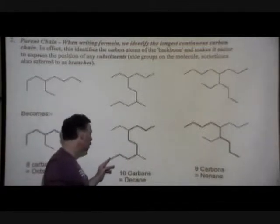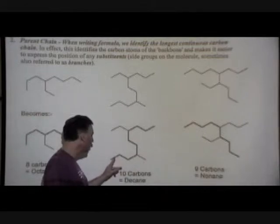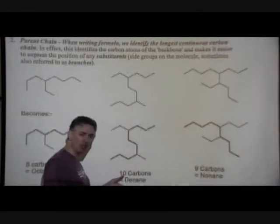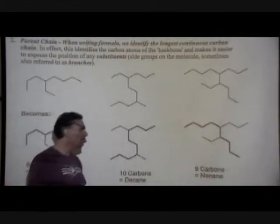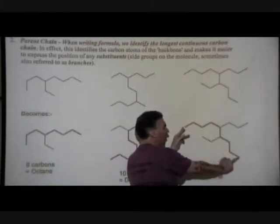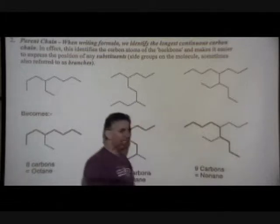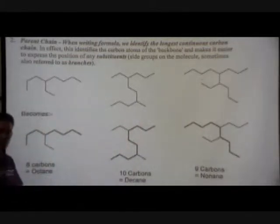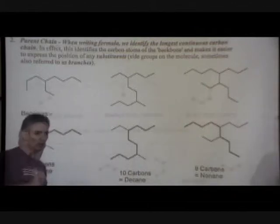For the second example, it's slightly more tricky. From here to here is the longest continuous chain of carbons, and that's ten carbons long - so it's based on decane. For the last one, the longest continuous chain of carbons - I've marked nine bonds in a slightly thicker line than the rest of the molecule. The longest continuous chain in this case is nine carbons long. The core of the name should represent the core of the molecule.